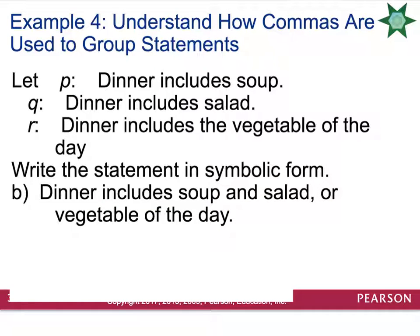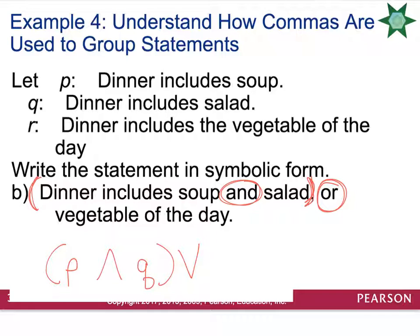Let's try another with the same statements. 'Dinner includes soup and salad, or vegetable of the day.' The comma now separates 'soup and salad' from 'vegetable of the day.' So 'soup and salad' — that is (P ∧ Q) — goes in parentheses on the left of the ∨, and R goes on the right. The symbolic form is (P ∧ Q) ∨ R. Be careful about where the comma is placed.